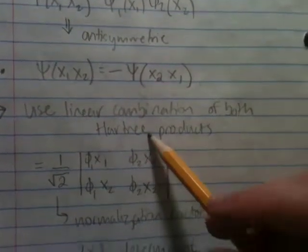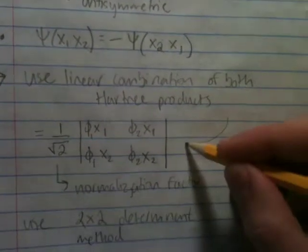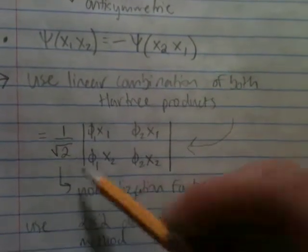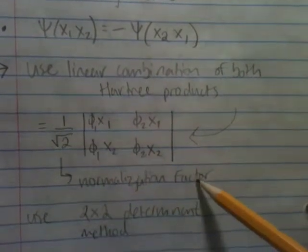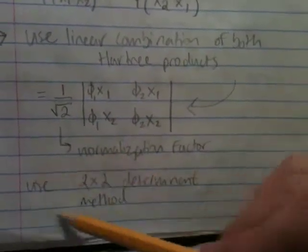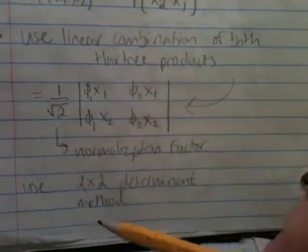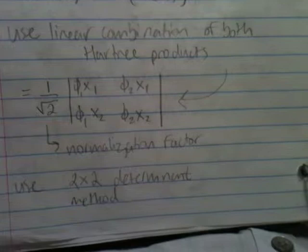Using a linear combination of both Hartree products, you get the Slater determinant to be this, where this is just your normalization factor, standard 1 over root 2, and then you just use your 2 by 2 determinant method, product minus product equals to 0.